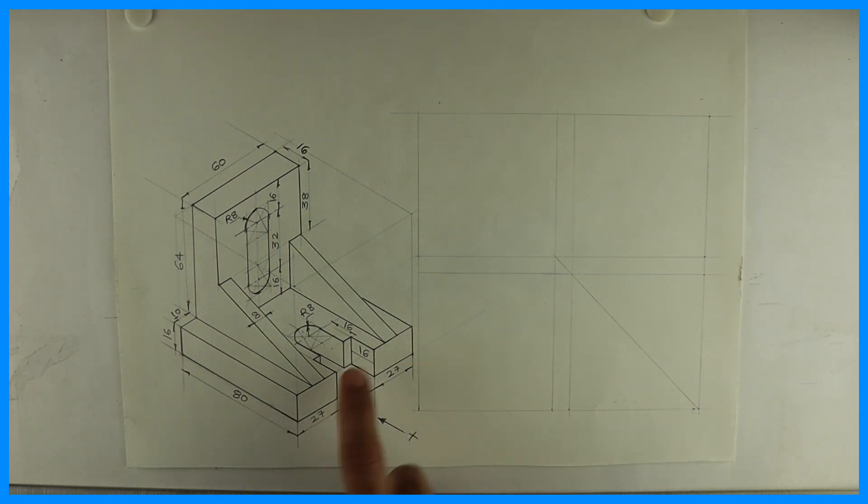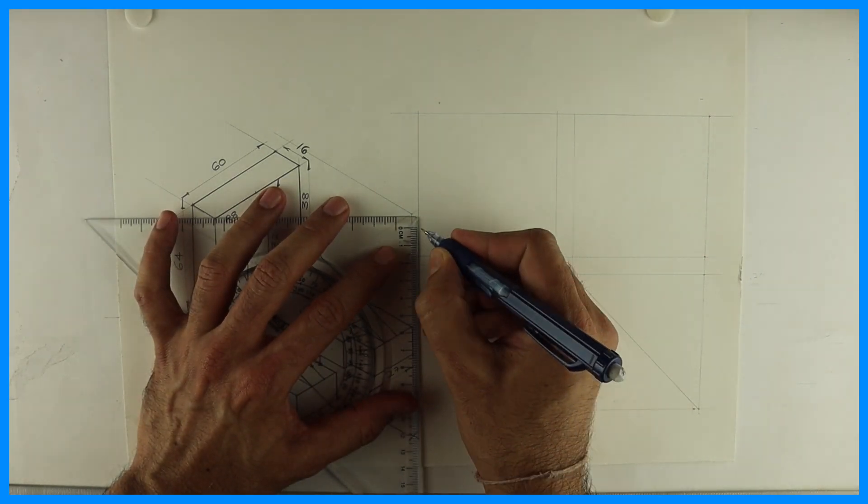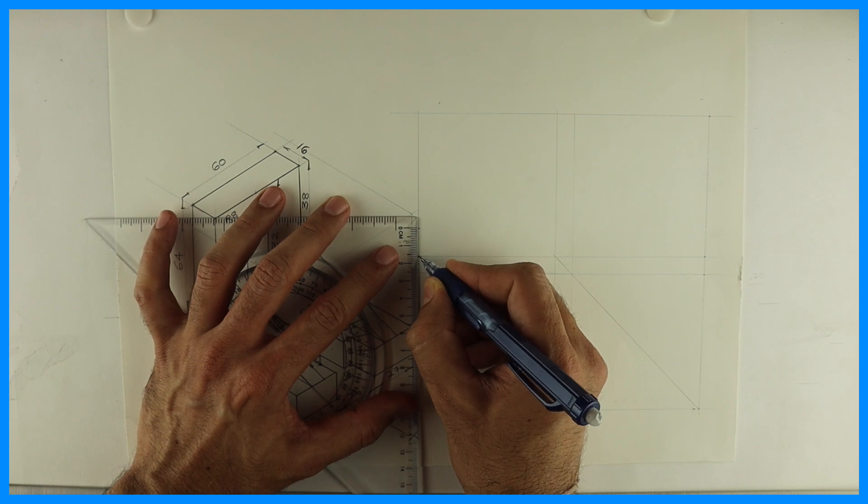So this is front view, top view, side view. Length is 80, height is 80, and width is also 80. So first you will draw the layout, after that we'll start with front view.